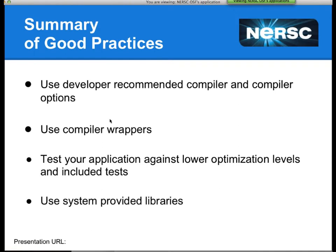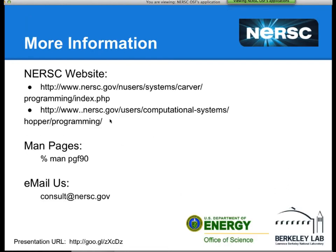As a summary of good practices for building applications at NERSC: use developer-recommended compilers and options so long as NERSC supports that compiler; always use the compiler wrappers whenever available; if you're having trouble passing a test suite, try at lower optimization levels first; and whenever possible, use the system-provided libraries. There is a ton of information on the NERSC website about building applications, compilers, and recommended options — check out the web page. Are there any other questions? Thanks, Jack.